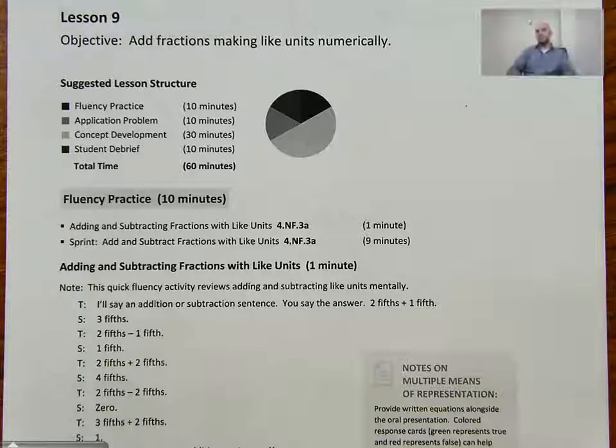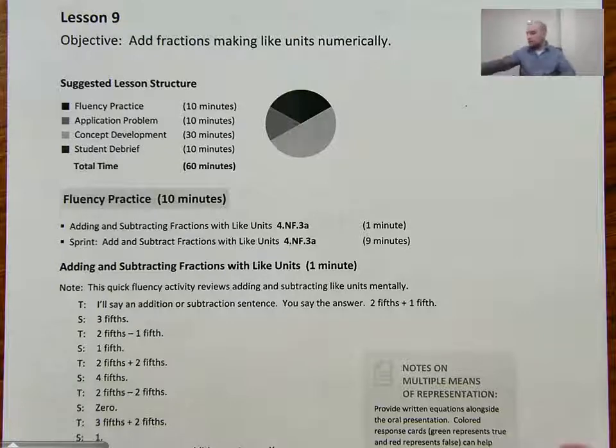Hello, everyone. It's Mr. Kissinger at the Citizenship Academy in Syracuse, New York. And today we are doing 5th grade math module 3, lesson 9. We're going to add fractions, making like units numerically. So we're going to move away from the visual model, and we're going to start to use more of a standard algorithm to find common denominators.